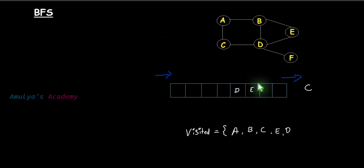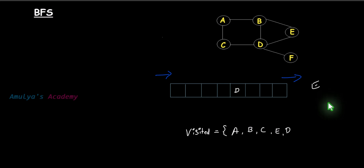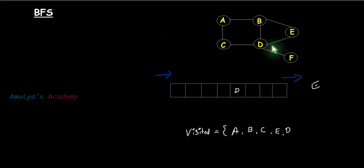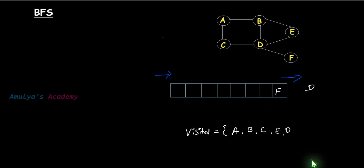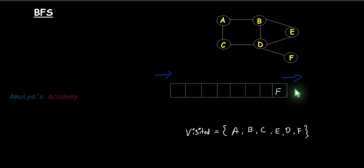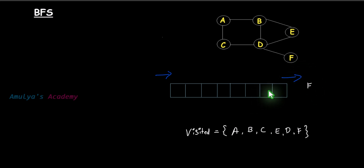Next, remove E from the queue and add all unvisited adjacent nodes of E. There are none, because E's adjacent nodes are B and D, which are already visited — so no need to add anything. Then remove D from the queue and add all unvisited adjacent nodes of D. F is unvisited, so add F to the queue and mark it as visited.